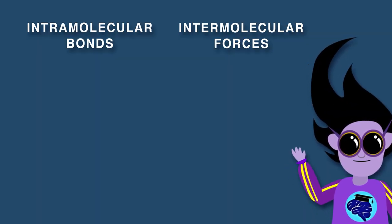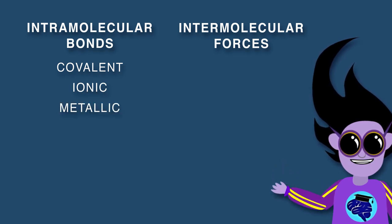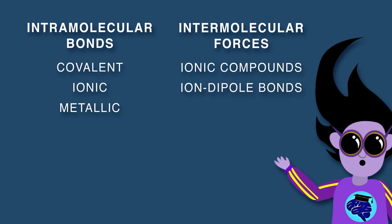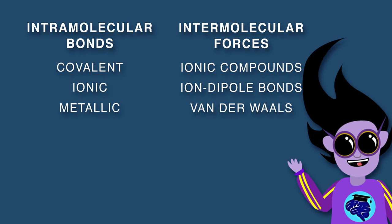The three types of intramolecular bonds are covalent, ionic, and metallic. Intermolecular forces include ionic compounds, ion-dipole bonds, and van der Waals forces, which are exhibited by covalent compounds.